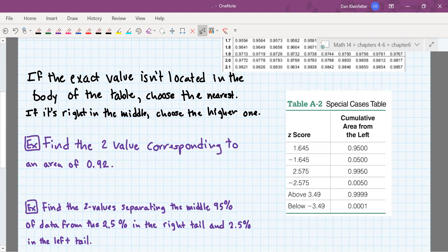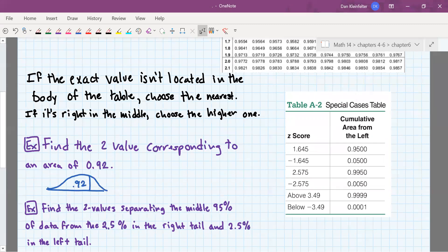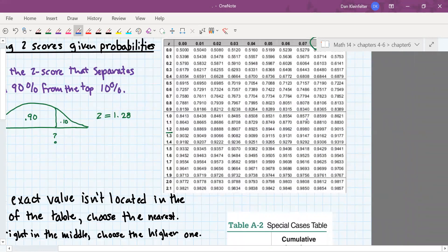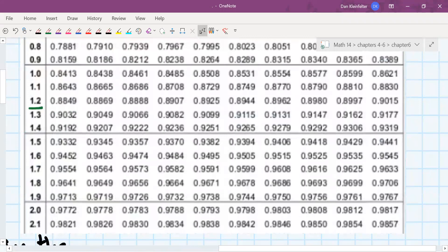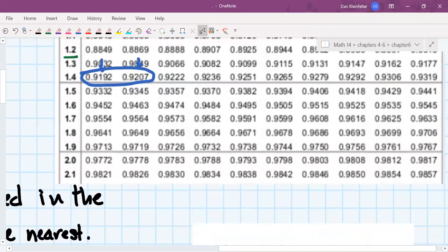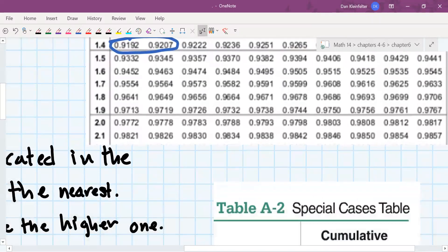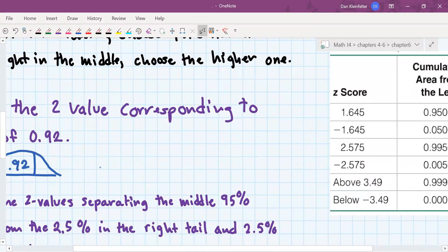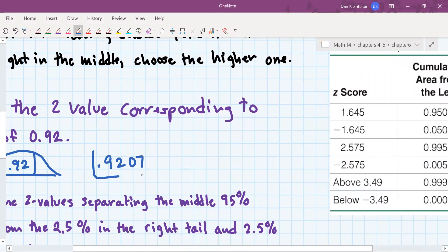So now we'll find the Z value corresponding to an area of 0.92. So 0.92. So let's take a look in the body of the table, see if we can find 0.92. So 0.92 looks like it's around here. This one is 8 ten thousandths down. This one is 7 ten thousandths bigger. So the one that is closer is 0.9207. That was just slightly closer.